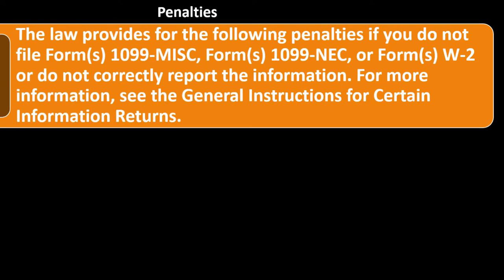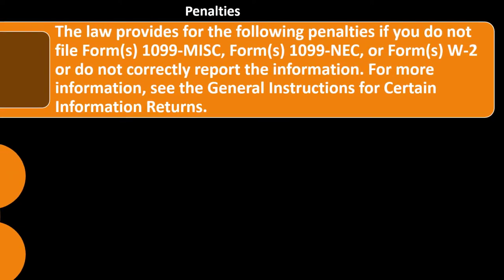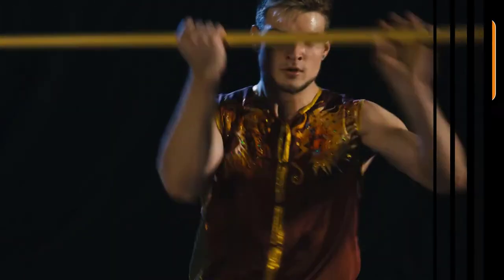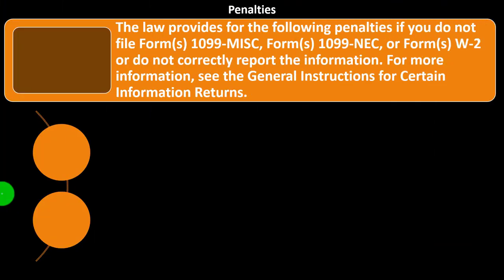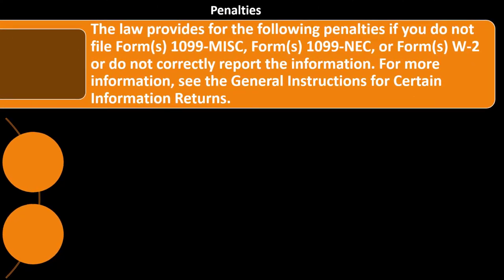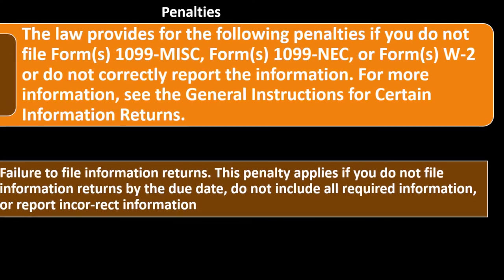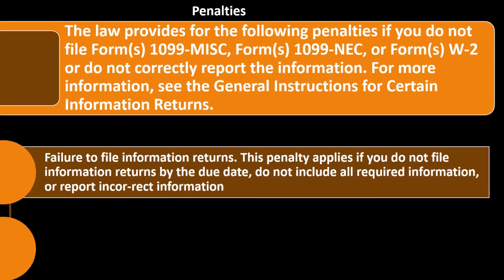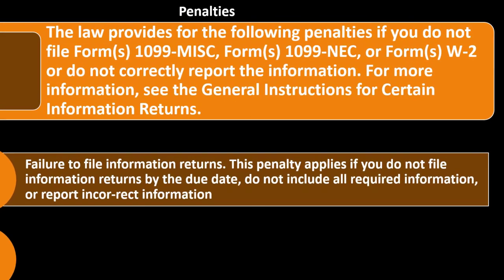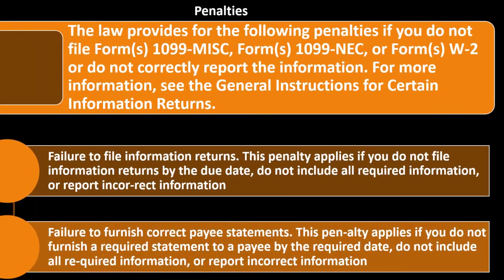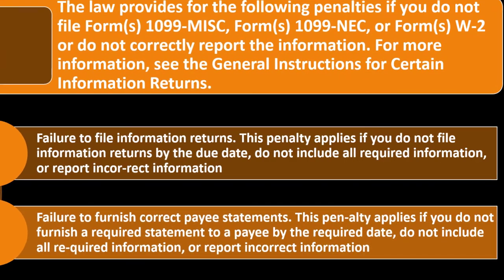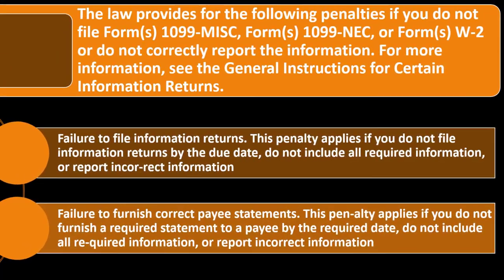Penalties: the law provides for the following penalties if you do not file Forms 1099 Miscellaneous, 1099 NEC, or W-2, or do not correctly report the information. Failure to file information returns: this penalty applies if you do not file information returns by the due date, do not include all required information, or report incorrect information. Failure to furnish correct payee statements: this penalty applies if you do not furnish a required statement to a payee by the required date, do not include required information, or report incorrect information.